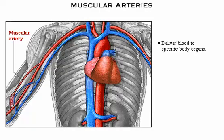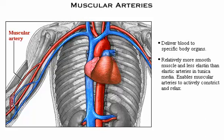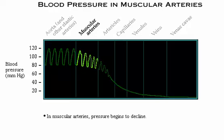Muscular arteries deliver blood to specific body organs. They have relatively more smooth muscle and less elastin than elastic arteries, enabling them to actively constrict and relax. In the graph of blood pressure in various vessels, note that the muscular arteries experience some decline in pressure.